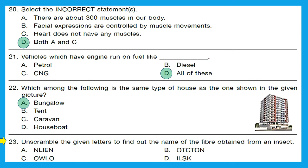Question 23: unscramble the given letters to find the name of the fiber obtained from an insect. Unscrambling: A gives linen, B gives cotton, C gives wool, and D gives silk. Cotton and linen are obtained from plants, wool is from animals like sheep or yak, whereas silk is obtained from the cocoon of the insect called silkworm. So option D, silk, is the right answer.